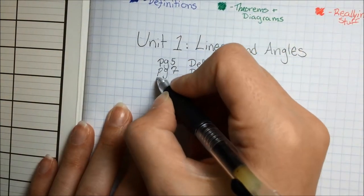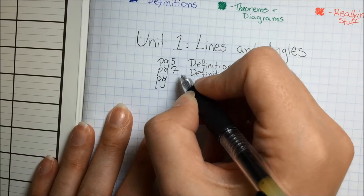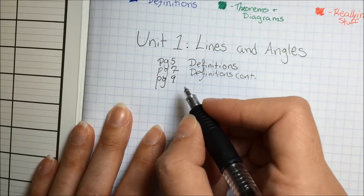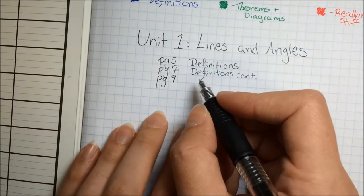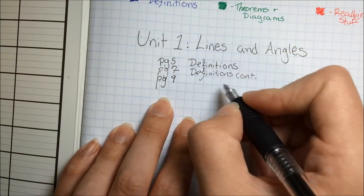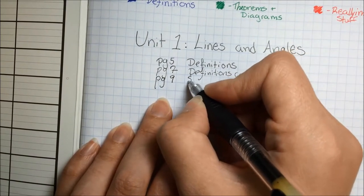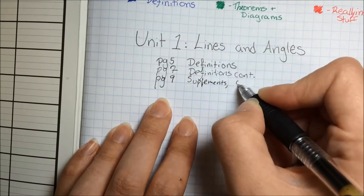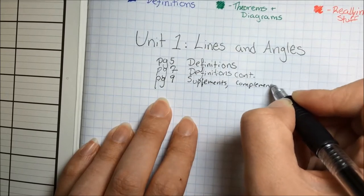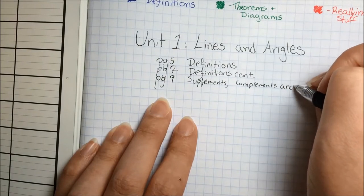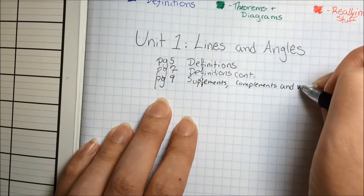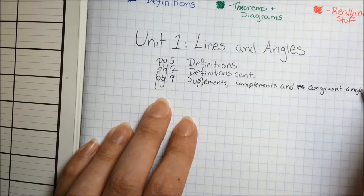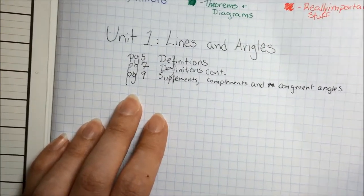Alright, welcome back for another great day. I was out on Friday for my daughter's sick day, so I'm sorry I couldn't be in class. I'm hoping that you had a great class and that you're watching this over the weekend. So on page 9, we're going to do supplements, complements, and vertical angles, and congruent angles. Let's go ahead and turn to page 9.